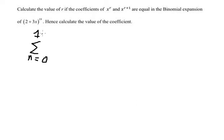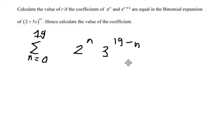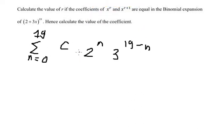We put n going from 0 to 19. From here we have 2 to the power of n, multiplied by 3 to the power of 19 minus n, and then we have the combination C. We put 19 and n, and this gives us s to the power of 19 minus n.